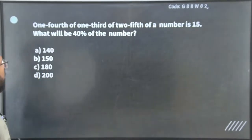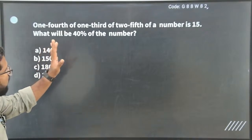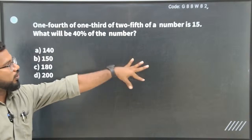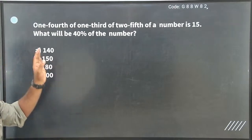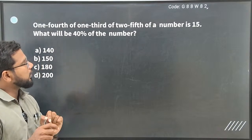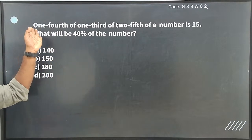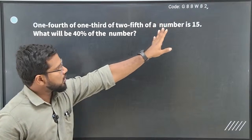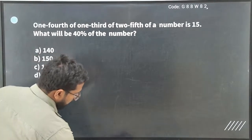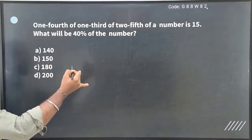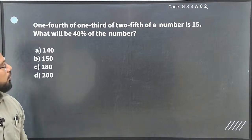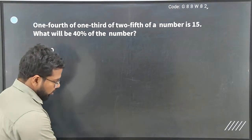First question is on the screen. One-fourth of one-third of two-fifth of a number is 15. Then what will be the 40 percent of the number? See, in this question there are two layers. First layer, you can identify that number. Once you identify the number, then find that 40 percent. Please always remember: one-fourth, one-third, one two-fifth - convert to fractions and multiply. Okay, so give a try.